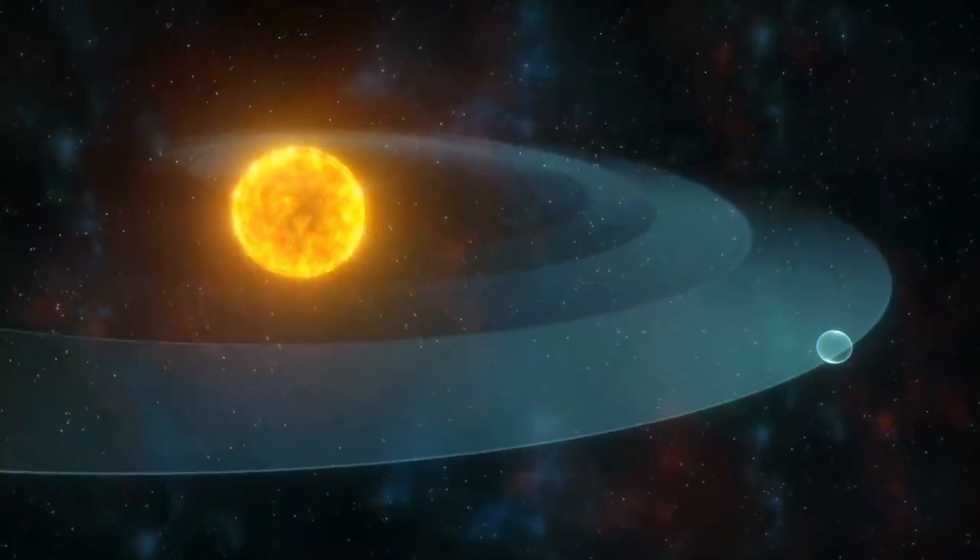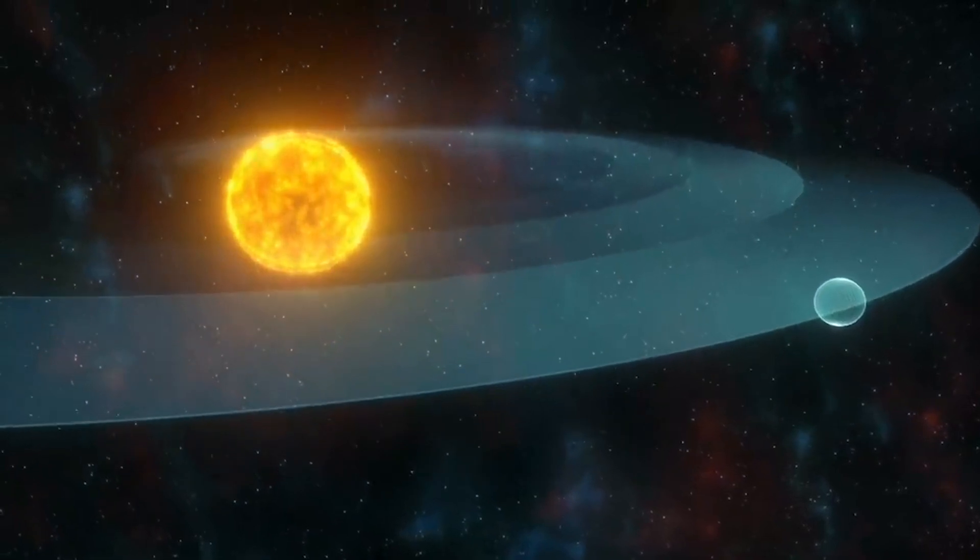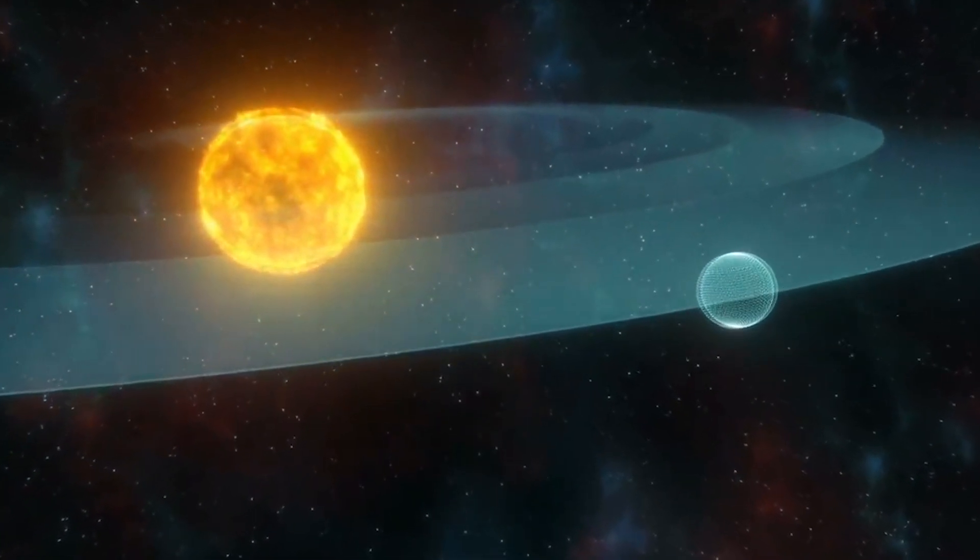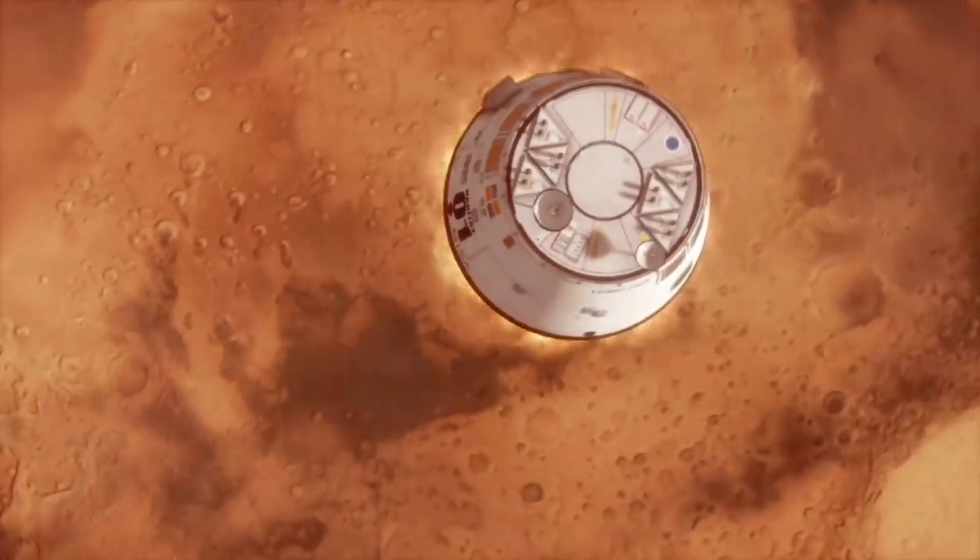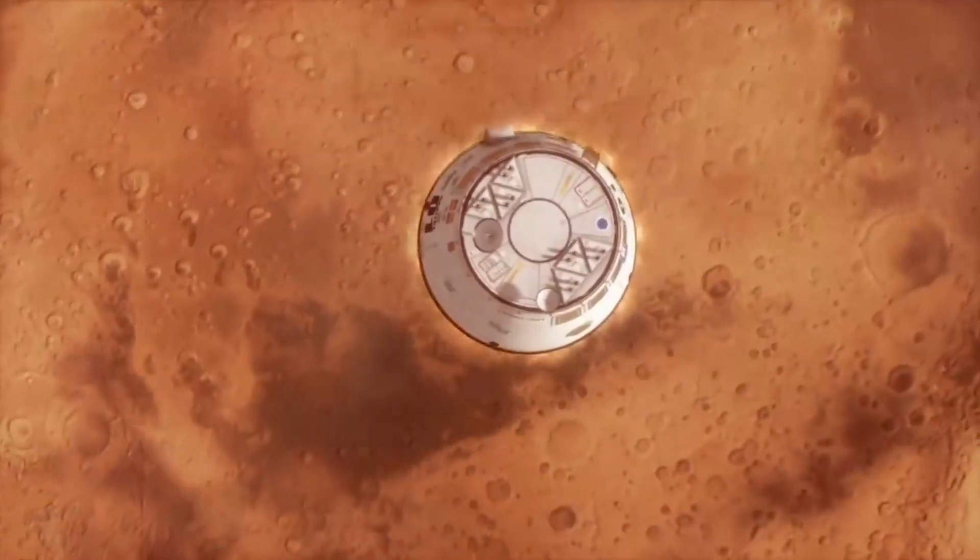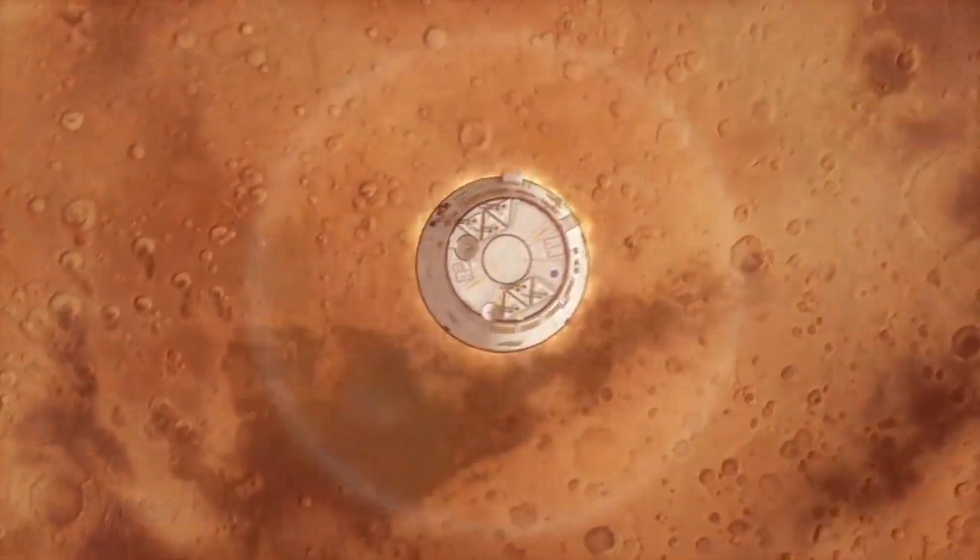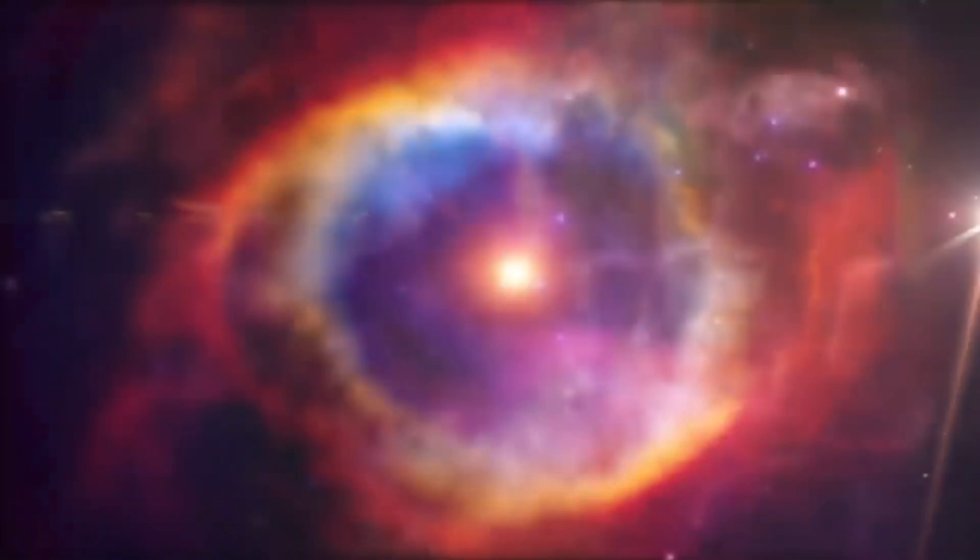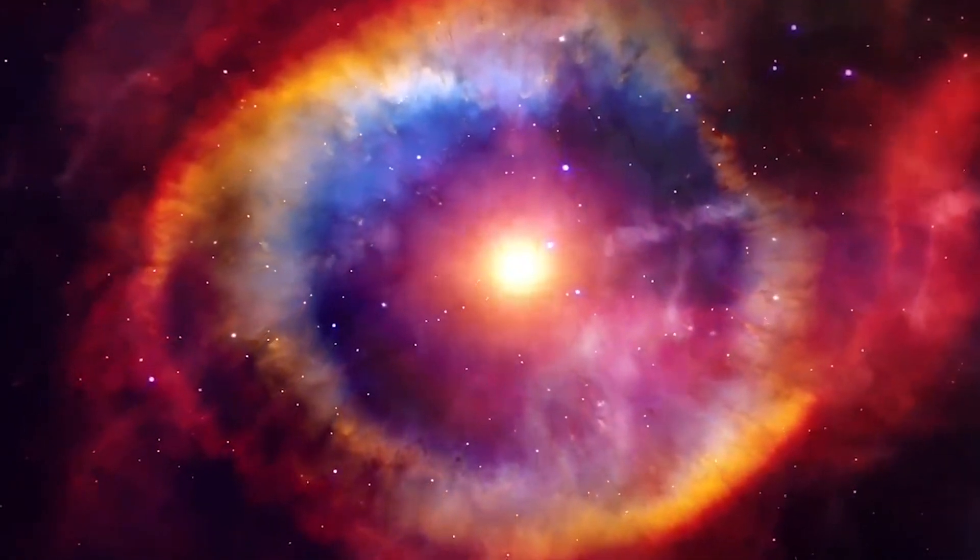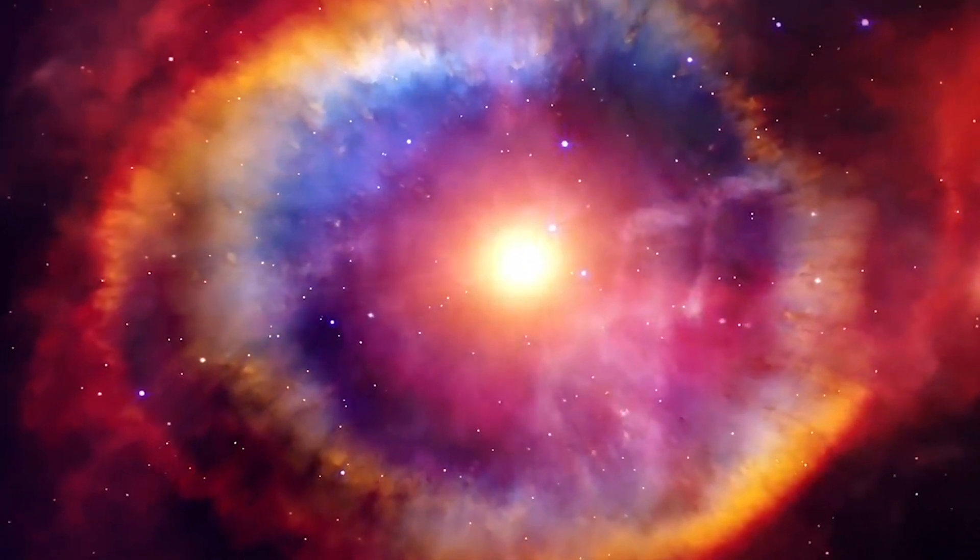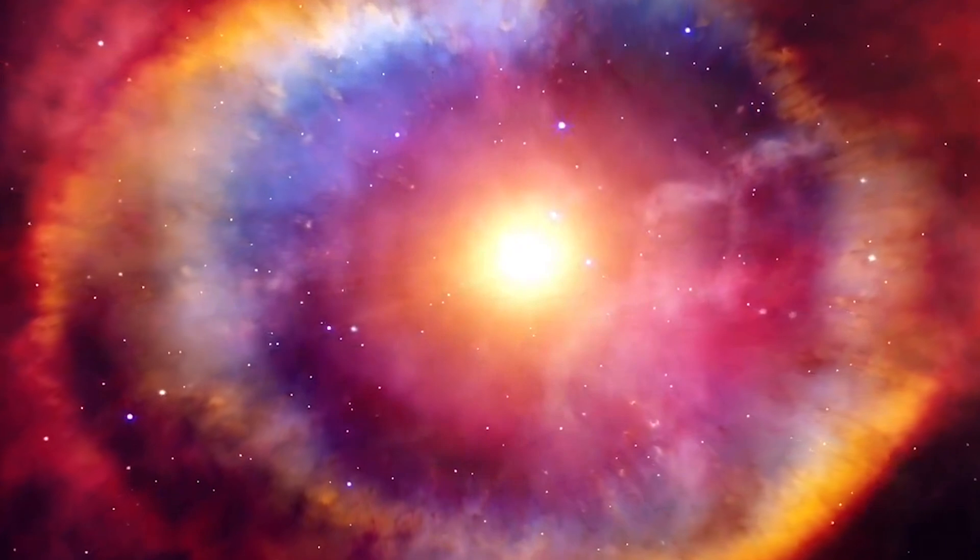Planets move in orbits around the sun due to a balance between their inertia and the gravitational pull of the sun. Inertia is the tendency of an object to keep moving in a straight line at a constant speed unless acted upon by an external force. The gravitational pull of the sun acts as this external force, constantly changing the direction of the planet's motion, making it follow a curved path.